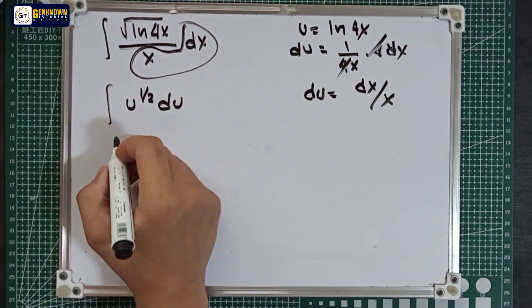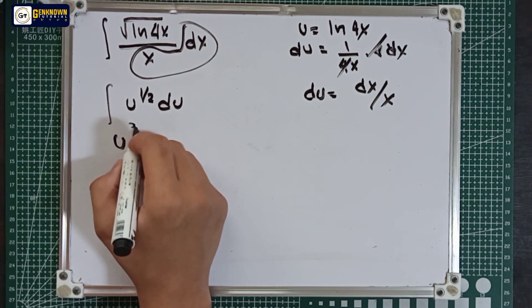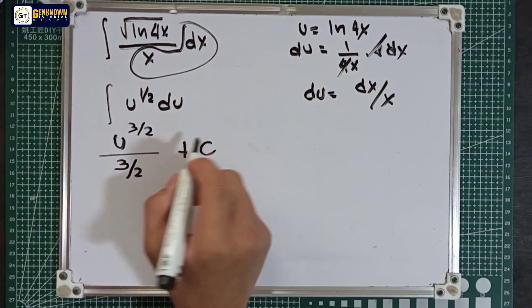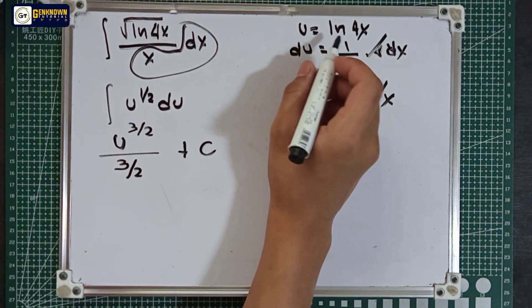Let's integrate. u raised to 1 over 2 plus 1 equals 3 over 2, over 3 over 2, plus the constant. Then substitute the value of u, which is ln 4x.